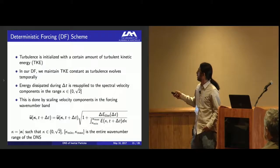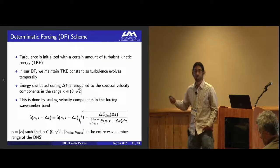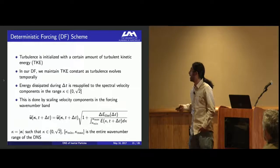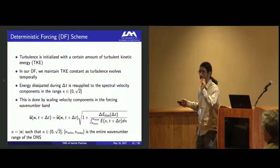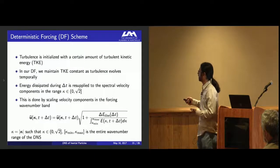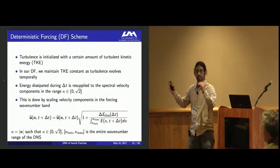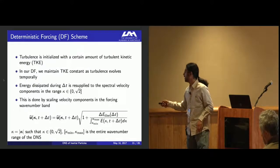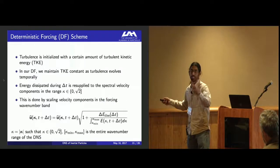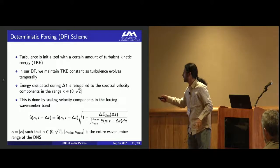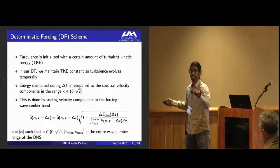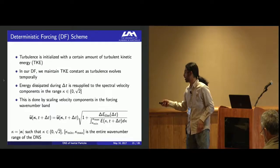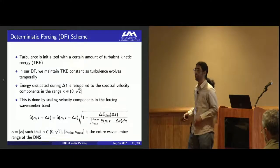In deterministic forcing, turbulent kinetic energy is initialized with a certain amount and we maintain the kinetic energy constant as turbulence evolves temporally. This energy dissipated during time step delta t is resupplied to the spectral velocity components in the range 0 to root 2—the small wave number band where we supply energy. This is done by scaling the velocity components appropriately.